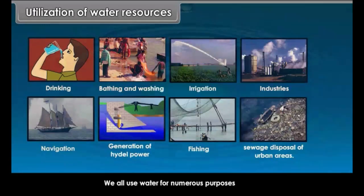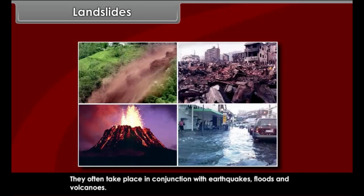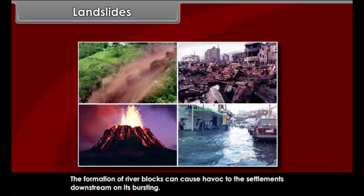Utilization of water resources: water is used for drinking, bathing and washing, irrigation, industries, navigation, generation of hydroelectric power, fishing, sewage disposal for urban areas, and numerous other purposes. Landslides are defined as the mass movement of rock, debris, or earth down a slope. They often take place in conjunction with earthquakes, floods, and volcanoes. A prolonged spell of rainfall can cause heavy landslides that can block the flow of a river, and the bursting of such river blocks can cause havoc to downstream settlements.